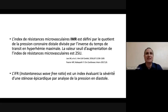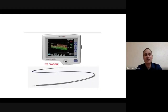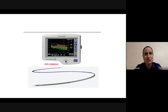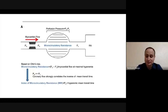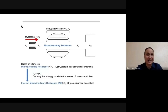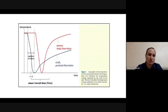L'IFR explore le réseau épicardique, comme la FFR. La technique de thermodilution utilise le même guide que l'IFR. Dans la console, il y a un module logiciel supplémentaire. On peut utiliser soit la mesure par la pression, soit la méthode de thermodilution, mieux corrélée à la CFR réelle. La méthode de thermodilution consiste à injecter une solution saline à température ambiante à travers le guide, et le guide mesure le temps de transit de cette solution saline jusqu'à la distalité des artères coronaires, par le changement de température.